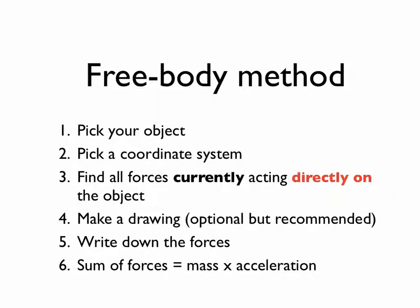The free body method works as follows. First, you pick the object that you're going to be calculating the forces on. Then, you pick a convenient coordinate system. After that, you find all the forces that are currently acting directly on the object — forces specifically working on the object, not forces the object is exerting on something else. Then you make a drawing, which you don't have to do but it helps. Then you write down all the forces. Finally, the sum of the forces is equal to the mass times the acceleration.